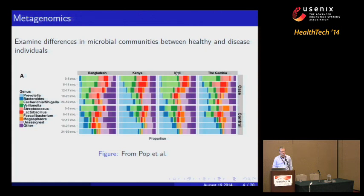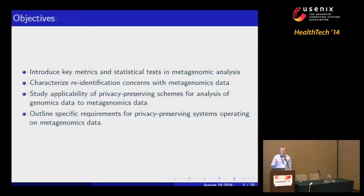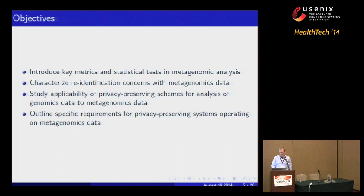The objectives for today's talk are: one, introduce key metrics and statistical tests in metagenomic analysis; two, characterize re-identification concerns when posting metagenomics data publicly; three, study the applicability of proposed privacy-preserving schemes for genomics data analysis and whether they can be applied to metagenomics; and four, outline the specific requirements for generating privacy-preserving systems operating on genomics data.